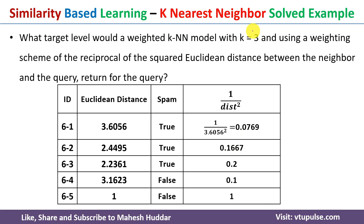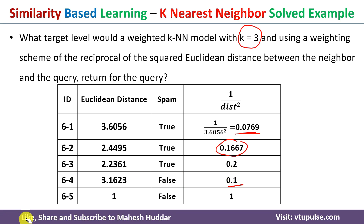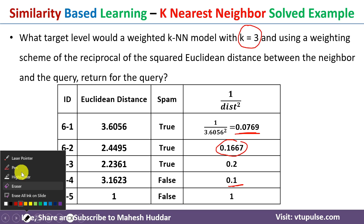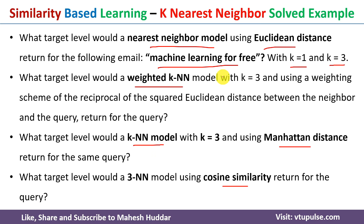With k=3 in the weighted KNN, we identify the three nearest neighbors by their highest weighted distances. The first nearest has a weighted distance of 0.2 (class: true/spam), the second is 0.1667 (class: false/non-spam), and the third is 0.1 (class: true/spam). The majority class among these three is true, so the new example is classified as spam.